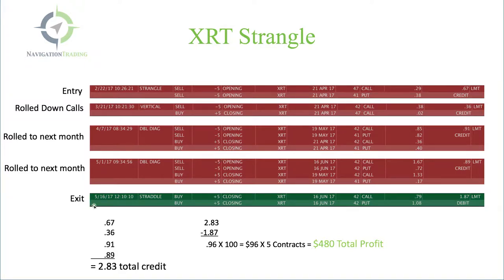Then today, 5/16, at the time of this recording, we bought back the entire position — all five contracts, the 42 put, 42 call — for a $1.87 debit. If we add up these credits, we've got a 67 cent credit that we initially got for placing the trade. We took in another 36 cent credit when we rolled down the calls. When we rolled to the next month, we collected another $0.89 credit, giving us total credits of $2.83. Then we bought back the position for $1.87, so $2.83 minus what we paid for it gives us a total profit of $0.96.